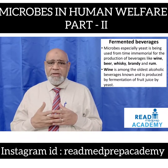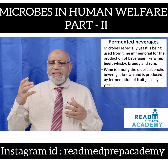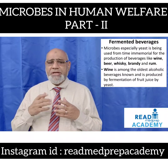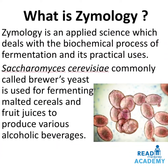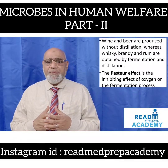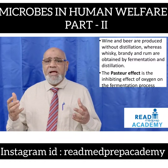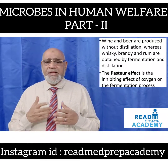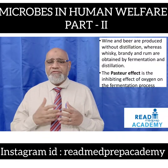Microbes, especially yeast, have been used from time immemorial for the production of beverages like wine, beer, whiskey, brandy, and rum. Wine is among the oldest alcoholic beverages and is produced by fermentation of fruit juice by yeast. Zymology is the applied science dealing with the biochemical process of fermentation. Saccharomyces cerevisiae, commonly called brewer's yeast, is used for fermenting malted cereals and fruit juices to produce various alcoholic beverages. Wine and beer are produced without distillation, whereas whiskey, brandy, and rum are obtained by fermentation and distillation. The Pasteur effect is the inhibiting effect of oxygen on fermentation.